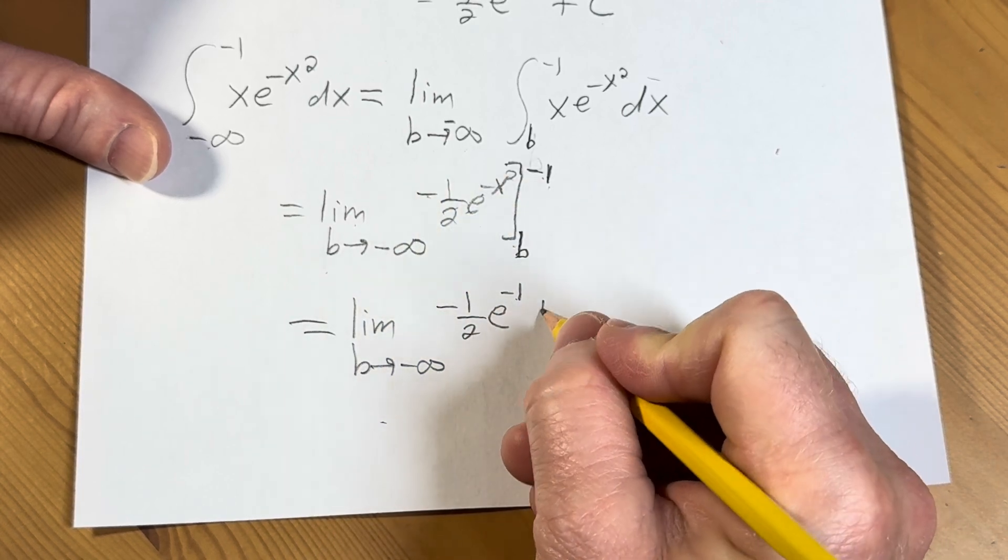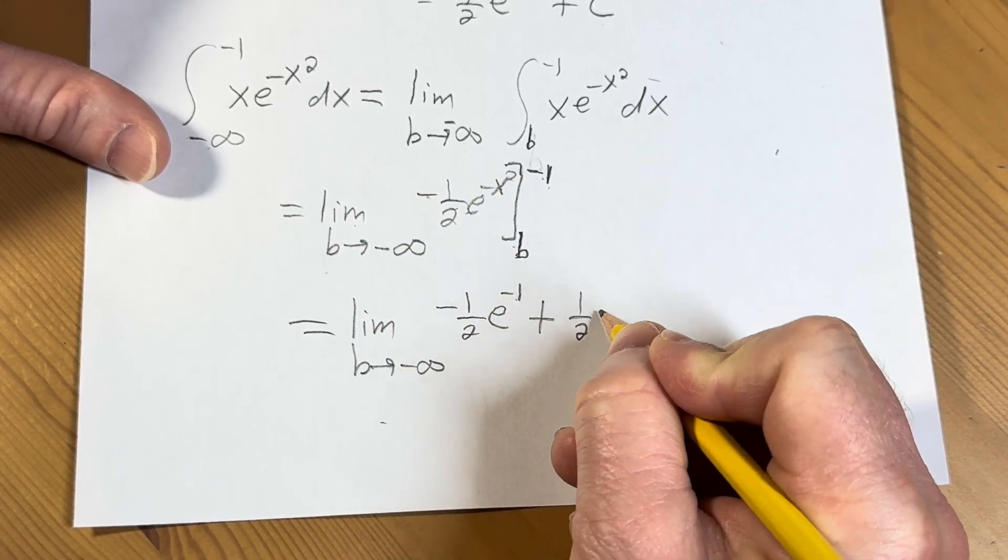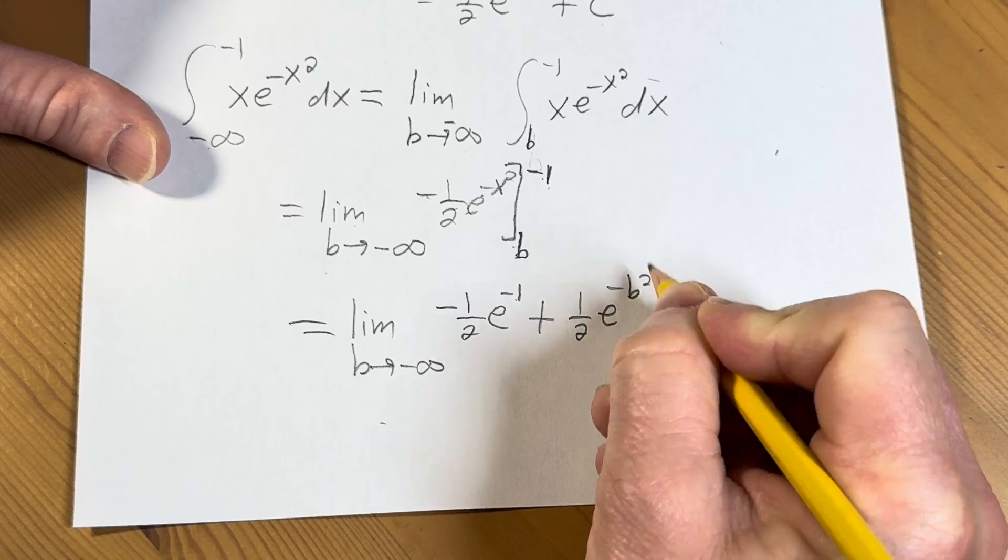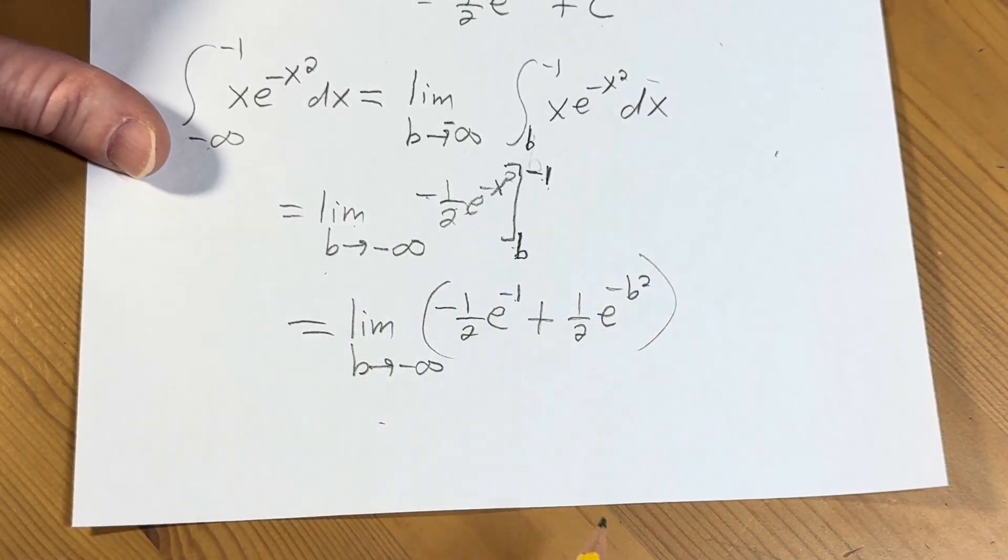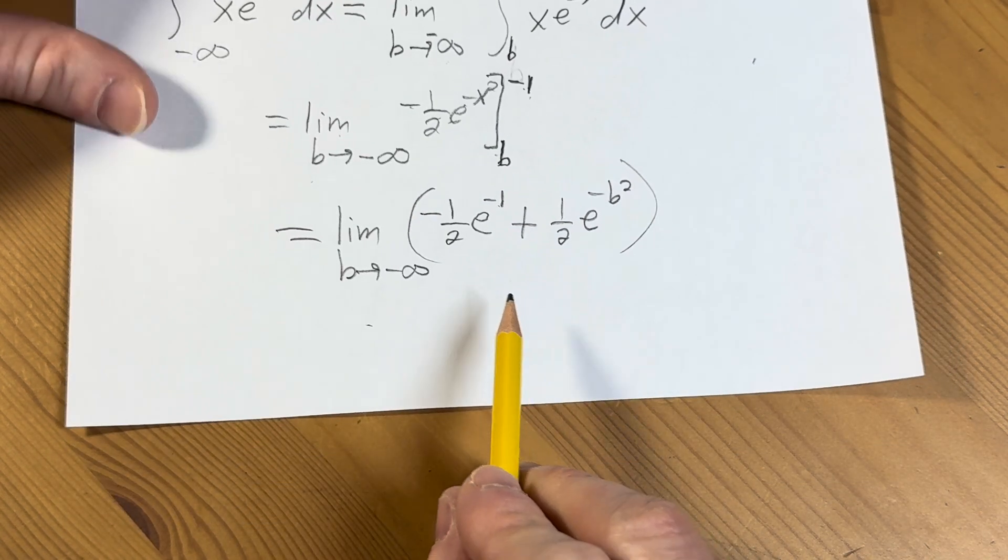Minus, it's already a minus, it's going to become a plus. 1 half e to the negative b squared. It's minus and minus, so it's plus.